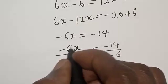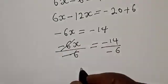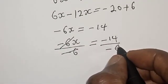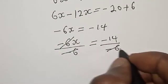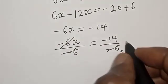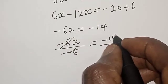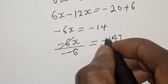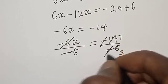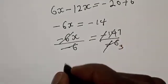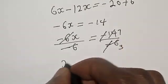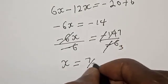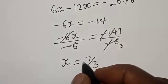This cancels. We simplify: 14 over 6 reduces to 7 over 3, and the negatives cancel. Then s is equal to 7 over 3. That is our final answer, and we can check to confirm if our answer is right or wrong.